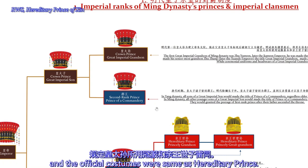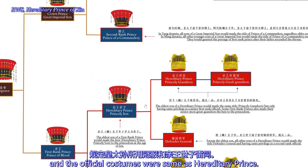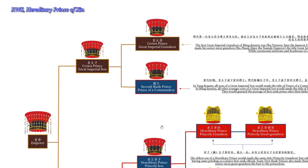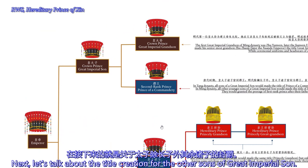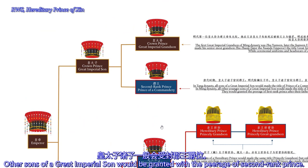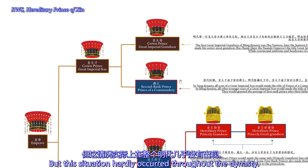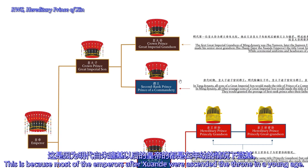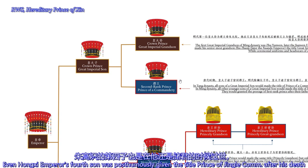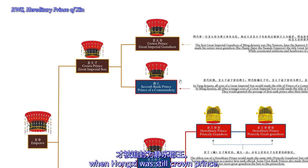The official costumes were the same as the hereditary prince. Next, let's talk about the creation of the Great Imperial Son's other sons. Other sons of a Great Imperial Son were created the title of second-ranked prince, but this situation hardly occurred throughout the dynasty. This is because most emperors after Xuande were ascended to the throne at a young age. Even Hongxi Emperor's fourth son was posthumously created the title Prince of Jingle when he died while Hongxi was still Crown Prince.